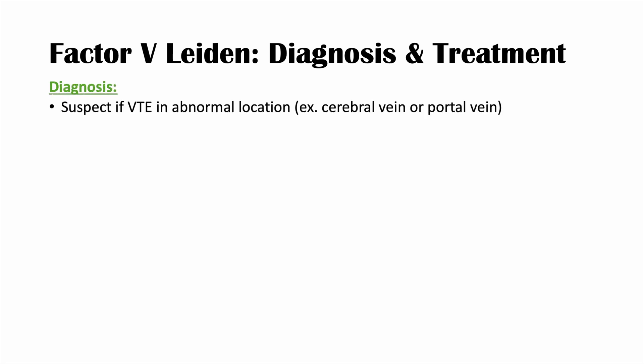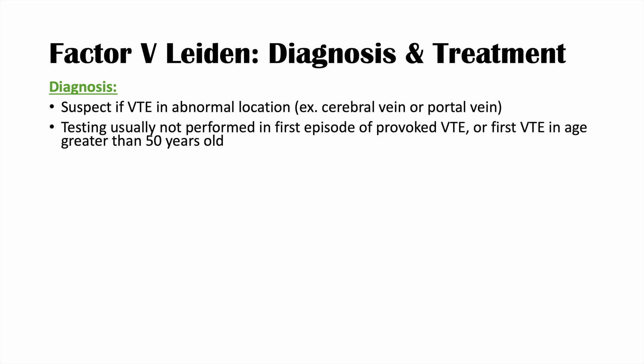Diagnosis of Factor V Leiden often starts with suspecting the condition when venous thromboemboli occur in abnormal locations, such as the cerebral veins or portal vein. Testing is generally not performed after a first episode of a provoked VTE, or a first VTE in someone over age 50. However, with multiple episodes of provoked VTE, or a VTE in an abnormal location, you can move on to genetic testing to detect Factor V Leiden.